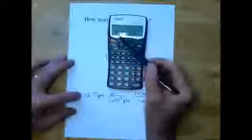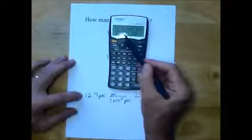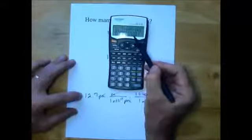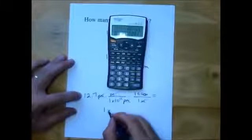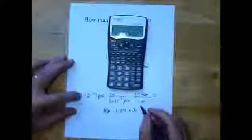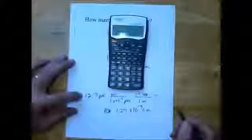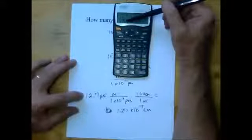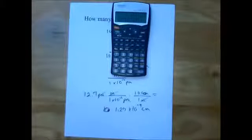We get 0.00000000127, and counting back the decimal places gives us 1.27 times ten to the minus ninth centimeters. And there you go — that's how many centimeters are in 12.7 picometers.